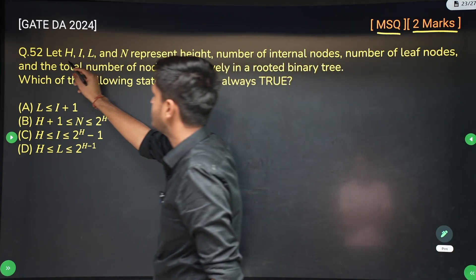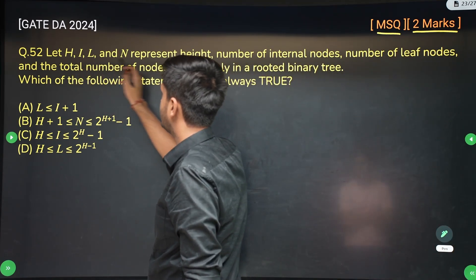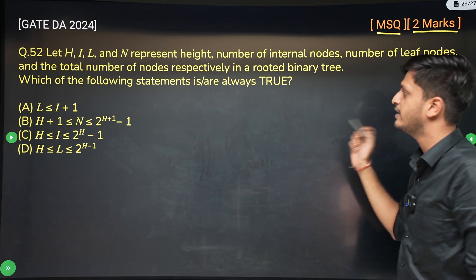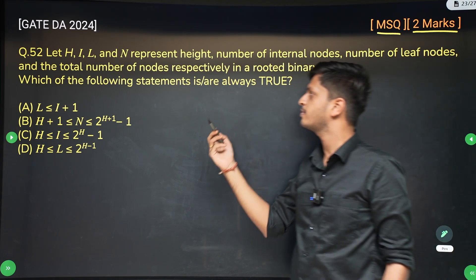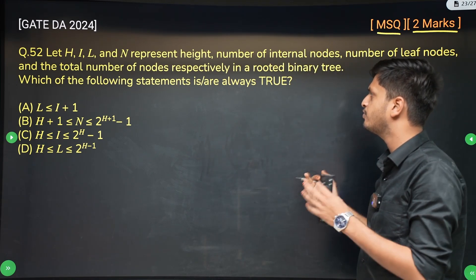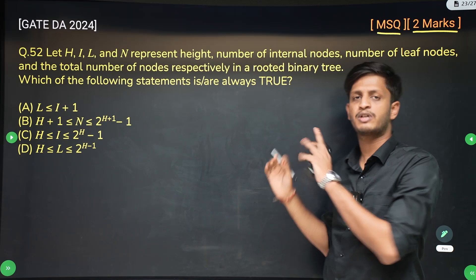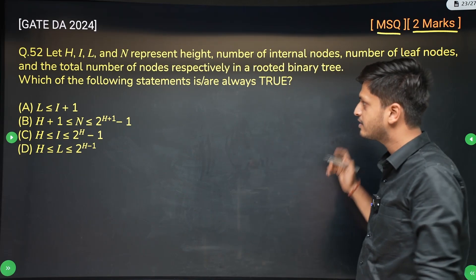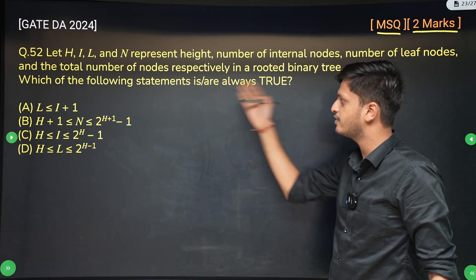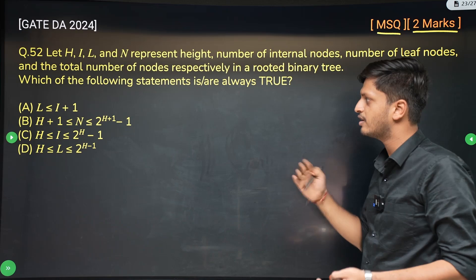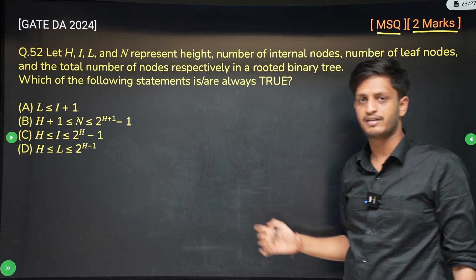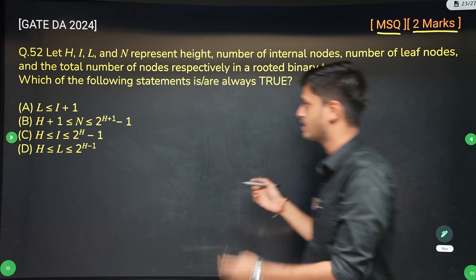Let h, i, l, and n represent the height, number of internal nodes, number of leaf nodes, and total number of nodes respectively in a rooted binary tree — not a full binary tree, just a rooted binary tree. Then which of the following statements is or are always true? So let's first try to draw it.